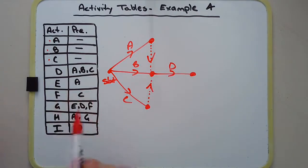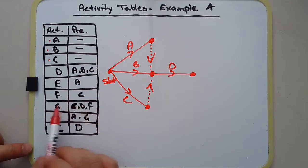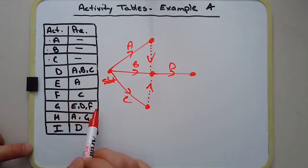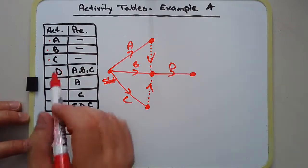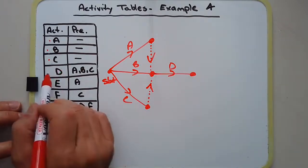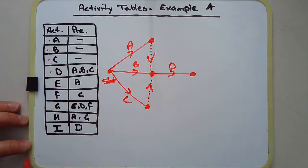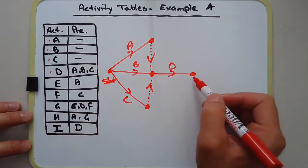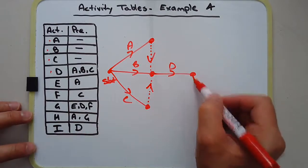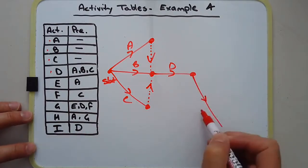Then we can draw activity D. Now, something here we just have to be very careful about. Activity G depends on E, D, and F, yet activity I just depends on D alone. So what I'm going to do is draw activity I after activity D.